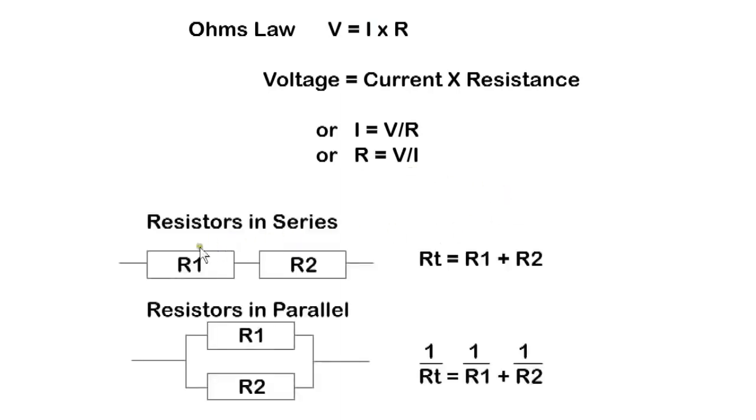When resistors are connected in series, we add the values to get total resistance. With resistors in parallel, we use this formula.